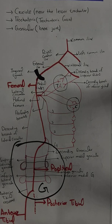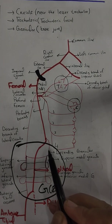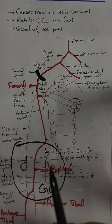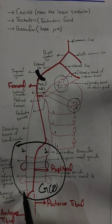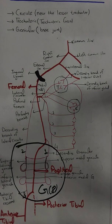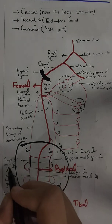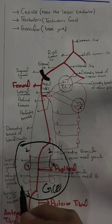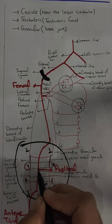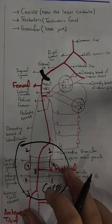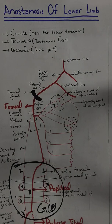There are a total of eight branches in the genicular anastomosis. Number one is the descending genicular from the femoral artery, number two is the descending branch of the lateral circumflex femoral artery, and number three is the anterior tibial recurrent. Then there are five genicular branches from the popliteal artery: the superior lateral genicular, superior medial genicular, inferior lateral genicular, inferior medial genicular, and the middle genicular. These eight branches together form the genicular anastomosis around the knee joint. This concludes the main anastomoses of the lower limb.